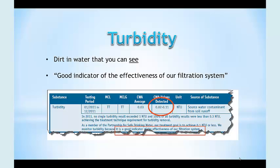What is turbidity? Turbidity is dirt in water that you can see with the human eye. Most municipalities do a good job removing the large dirt particles in an effort to keep their underground pipes clear. Turbidity is not harmful — as the old saying goes, a little dirt never hurt anyone.